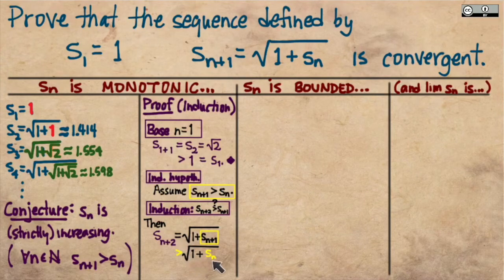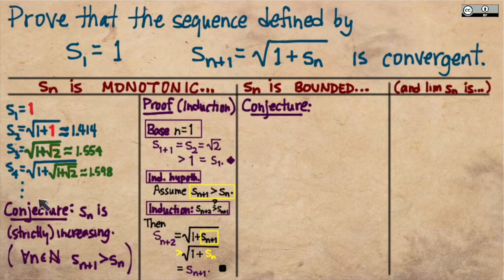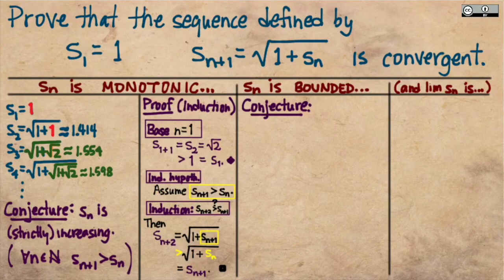The square root of 1 plus sₙ is, by the recursive definition of our sequence, exactly the (n+1)th term. That establishes the proof that sₙ is not only monotonic but in fact strictly increasing. So we now know that we have a monotonic sequence.